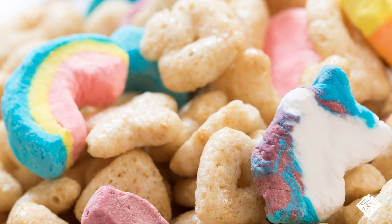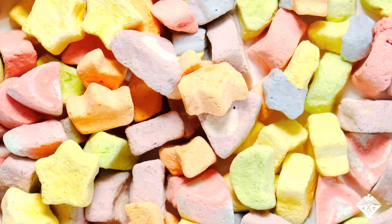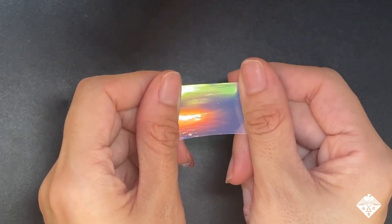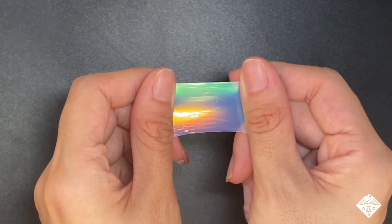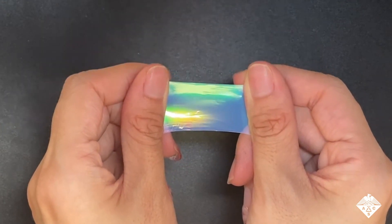Rainbows and sugar may conjure up images of a certain leprechaun-branded breakfast cereal. But now, researchers reporting in ACS Nano have created a rainbow-colored, kaleidoscope-like film for telling different sweeteners apart.